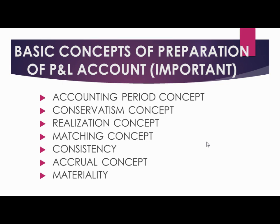Within the profit and loss account, gross profit is shown first — it is simply sales or revenue minus the cost of goods purchased. Next is operating profit, where operating expenses are excluded because they are recurring expenses needed to run the business. Non-operating expenses and non-operating income — such as interest income or profits from sales — are also added or subtracted to arrive at operating profit.